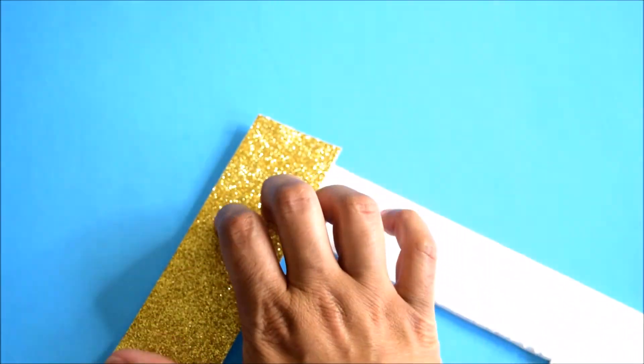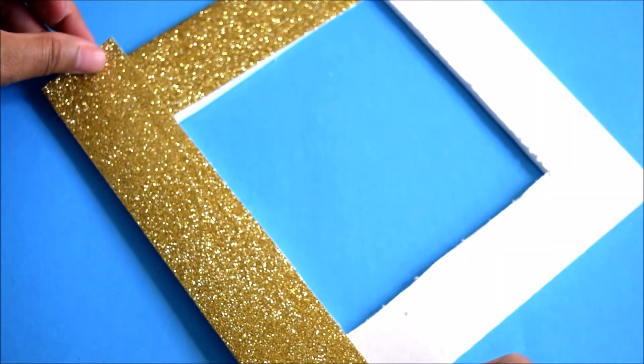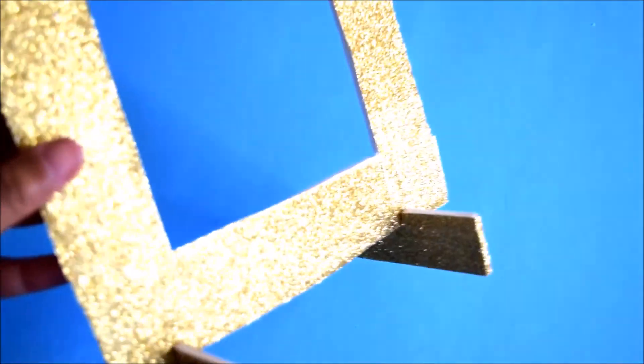To decorate this I'm just using glitter tape but you can spray paint them or do whatever you want. So once I have the tape on there I just start cutting out the extra tape.